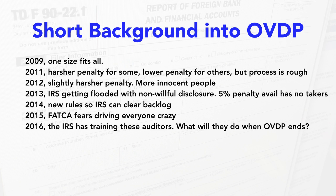In 2011, the IRS changed it to say everybody who has a problem can come clean. They also decided to have a lower penalty structure for others, but getting that lower penalty was kind of rough. In 2012, they increased a slightly harsher penalty for those who were intentionally not reporting. But they were finding more and more innocent people — the big fish intentionally evading taxes really weren't coming clean. So in 2013, the IRS was getting flooded with non-willful disclosures, and there was a small streamlined provision where a 5% penalty would apply, but the limitations were so severe there were really no takers.